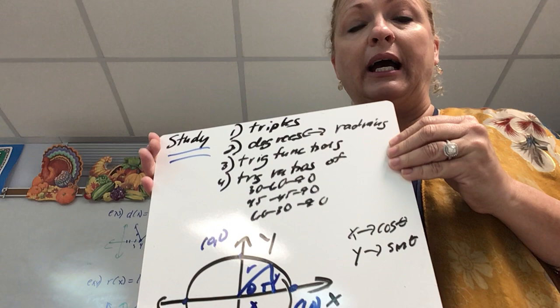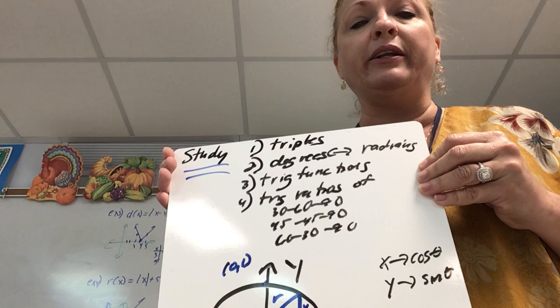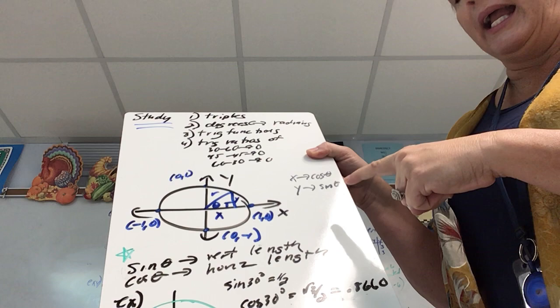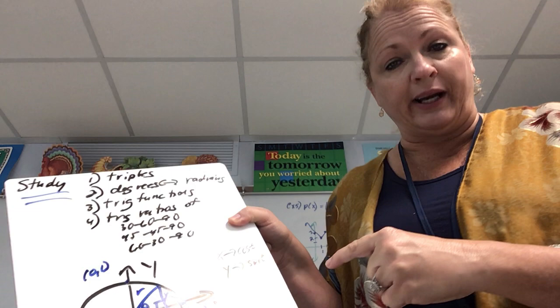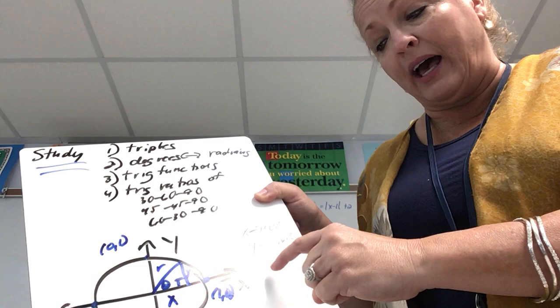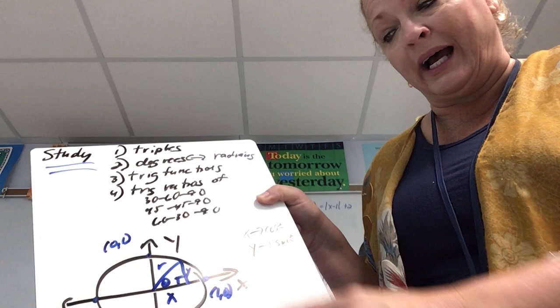Now we're going to expand on how to find trig ratios for angles that aren't in quadrant one — for example, the sine of five pi over four. Before we can do that, we have to understand the unit circle and the meaning of cosine and sine. We associate cosine with our x-coordinate, our horizontal distance, and sine with our y-coordinate, our vertical distance.